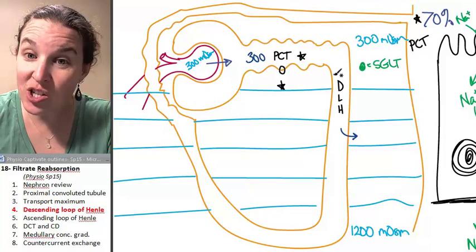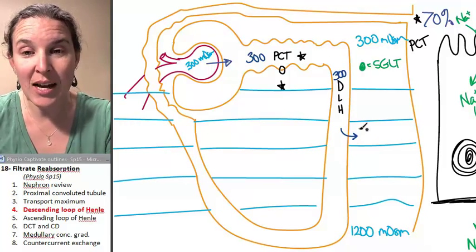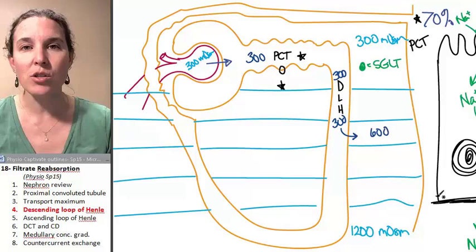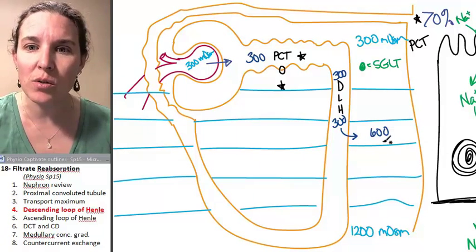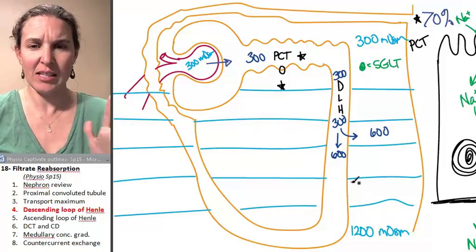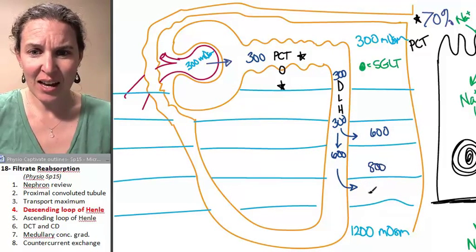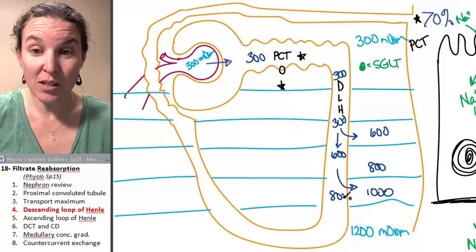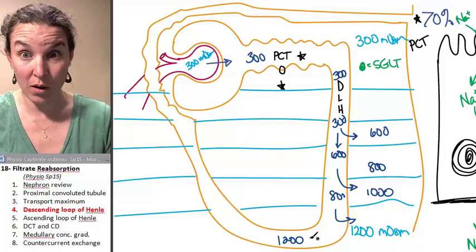When the filtrate enters the descending loop of Henle, it's isosmotic to 300 milliosmoles. However, look what happens when this is 600 milliosmoles - water, it's way more concentrated outside, so water is going to leave. What's that going to do to the concentration? It's totally going to become more concentrated inside because the water left. More water is going to continue to leave, like at 800 and 1,000, until ultimately our filtrate is concentrated up to 1,200 milliosmoles.